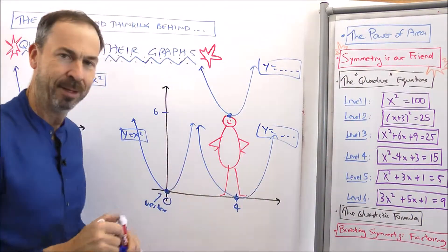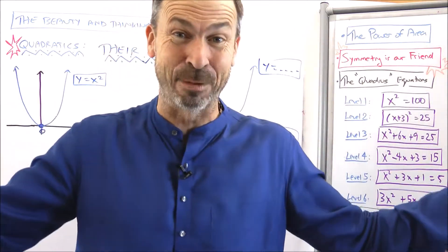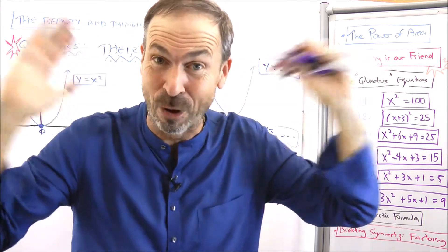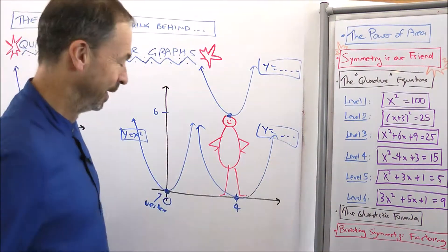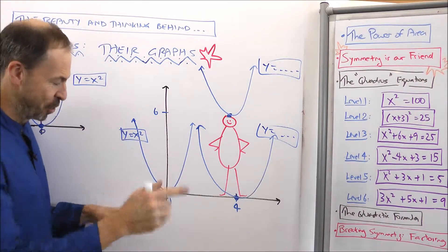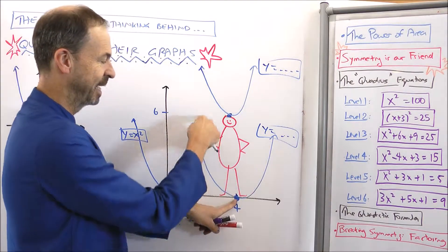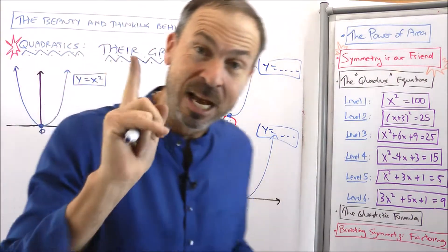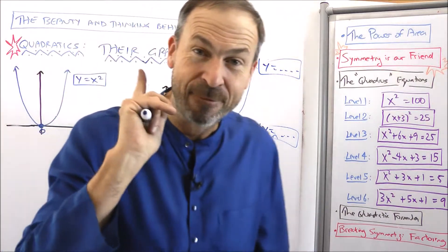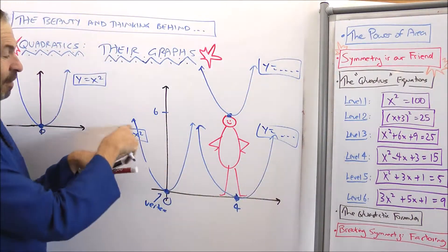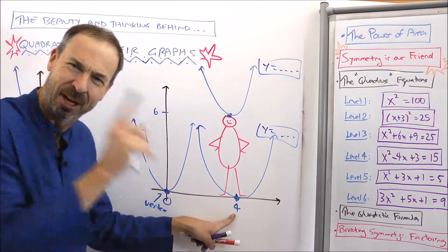Here's the flash of insight: this graph has all its interesting action happening at x equals zero, and I want a graph that instead has all the interesting action at x equals four. That means I want four on this graph to behave like zero on the original graph. I want the number four to behave like zero in a formula like that one.